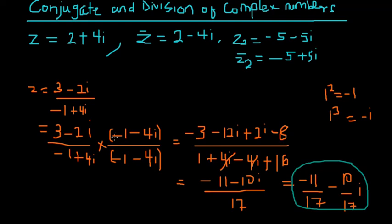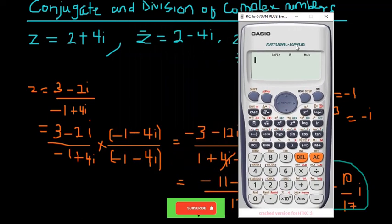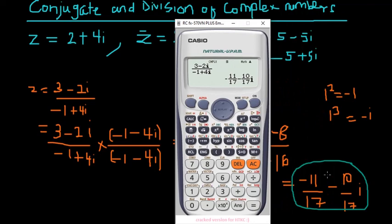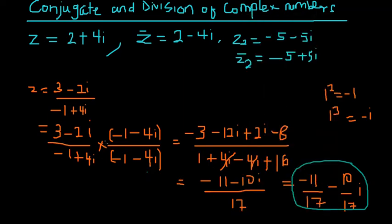Let's verify with the calculator. Enter (3 - 2i) divided by (-1 + 4i) and see what we get. The calculator gives the same answer we calculated. You can either show full working or use the calculator — both approaches work fine.